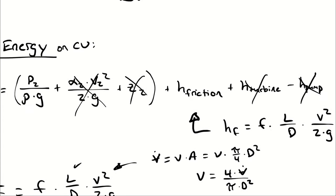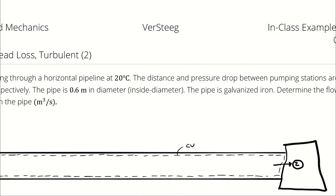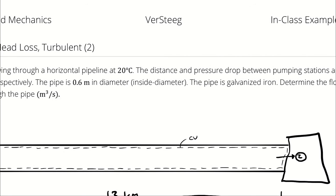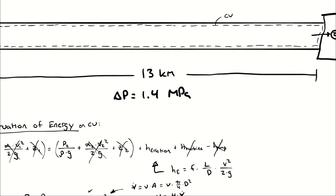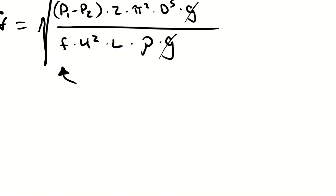However, we don't know the velocity. The only way to proceed is to make an assumption about the Reynolds number, use that to calculate a velocity, use that velocity to calculate a new Reynolds number, and repeat until convergence. With a computer we could use MATLAB, but here we'll do the guess-and-check process by hand.